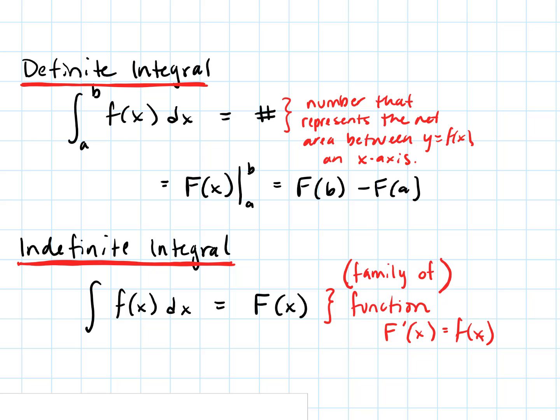Let's end by reviewing where we started. The definite integral represents a number — we find an antiderivative and evaluate it — and that number represents the net area between f of x and the x-axis. An indefinite integral gives us back the general antiderivative, which is an actual function whose derivative is little f of x. When working with an indefinite integral, we include the plus C to represent the family of functions.